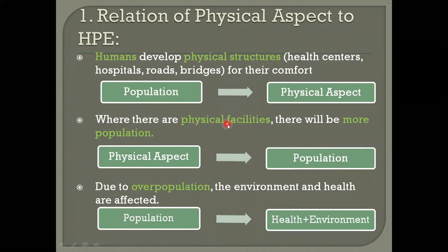The second point: where there are physical facilities, there will be more population. Wherever there are wide roads, many buildings, offices, and health centers, many people will be concentrated there. So there will be more population. This shows the relationship between physical aspect and population.